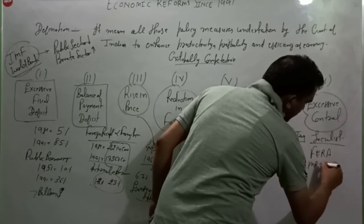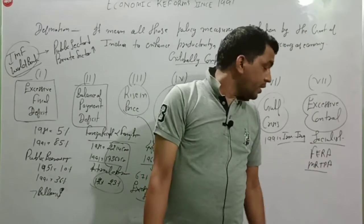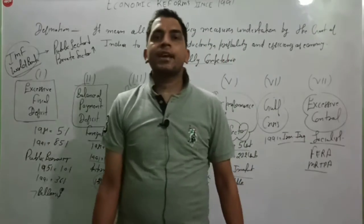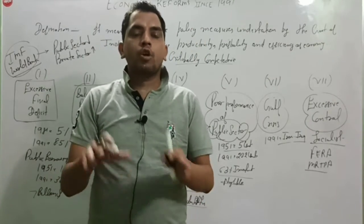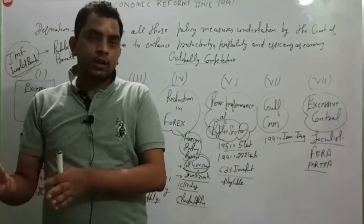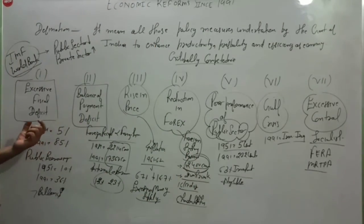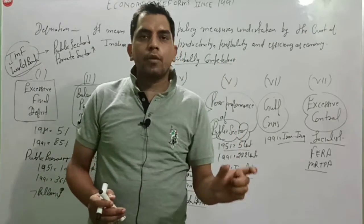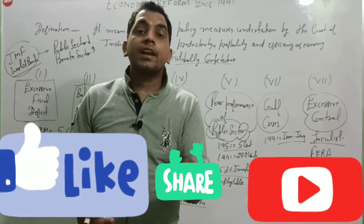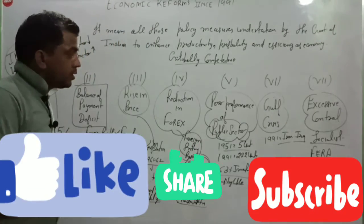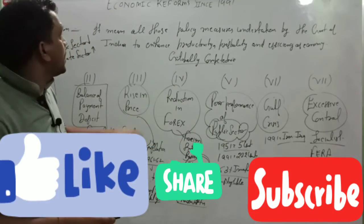The government enforced controls through acts like the MRTP Act (Monopolistic and Restrictive Trade Practices Act) and the Foreign Exchange Regulation Act (FERA), which enhanced government control over the private sector. This excessive control stunted economic growth. Over 40 years — from 1950 to 1990 — these factors led to poor economic development. Ultimately, due to all these failures, India applied for economic reforms.